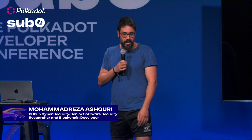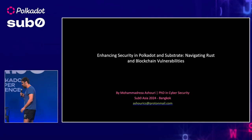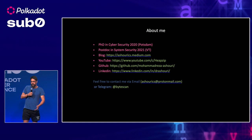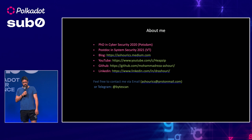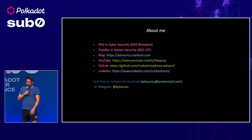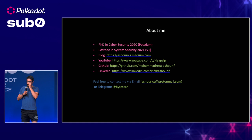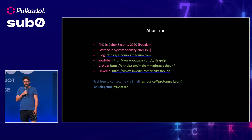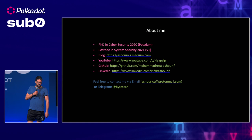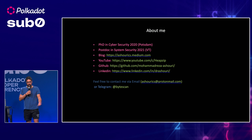This is Mohamed Razal Ashuri, or you can call me Mo. In this last presentation I'm going to talk about how to enhance security in Polkadot and Substrate by navigating Rust and blockchain vulnerabilities. I mostly focus on Rust and I assume that maybe you're not a Rust developer, so I'll also talk about some basics. I got my PhD in cybersecurity in 2020 from the University of Potsdam, then I did my post-doc in system security in 2021 from Virginia Tech. You can follow me for security content on Medium, YouTube, GitHub, or LinkedIn. Feel free to drop me an email or contact me on Telegram.